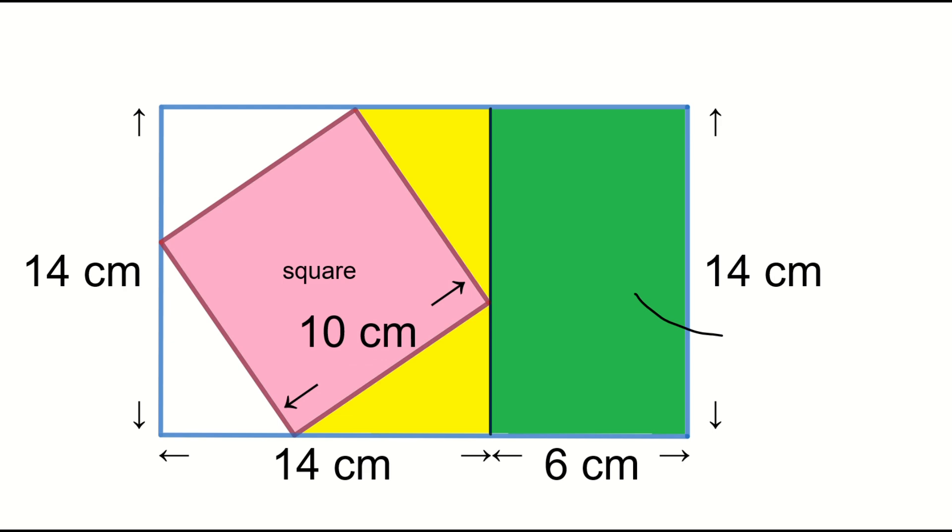The area of the green rectangle is 14 times 6 equals 84 square centimeters. It's easy.